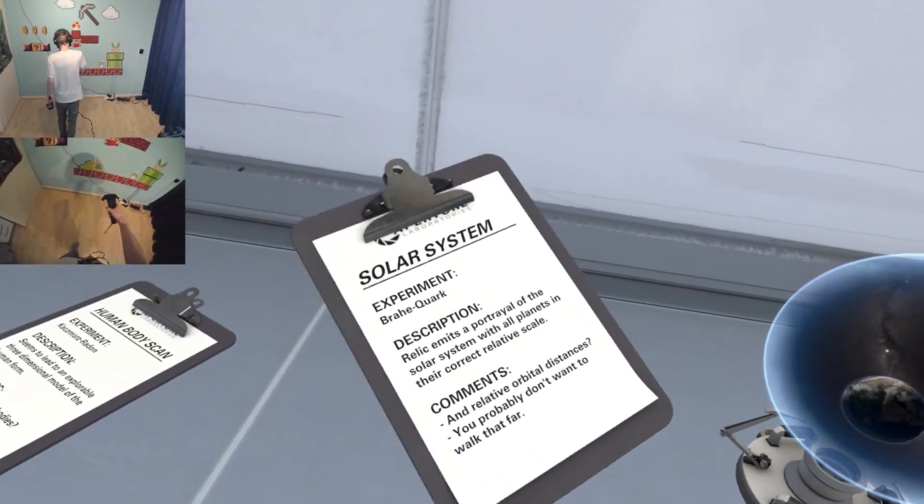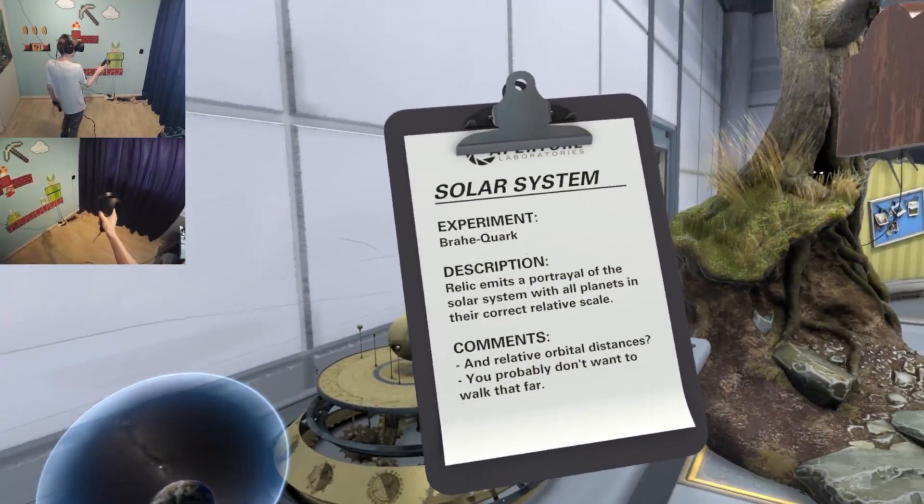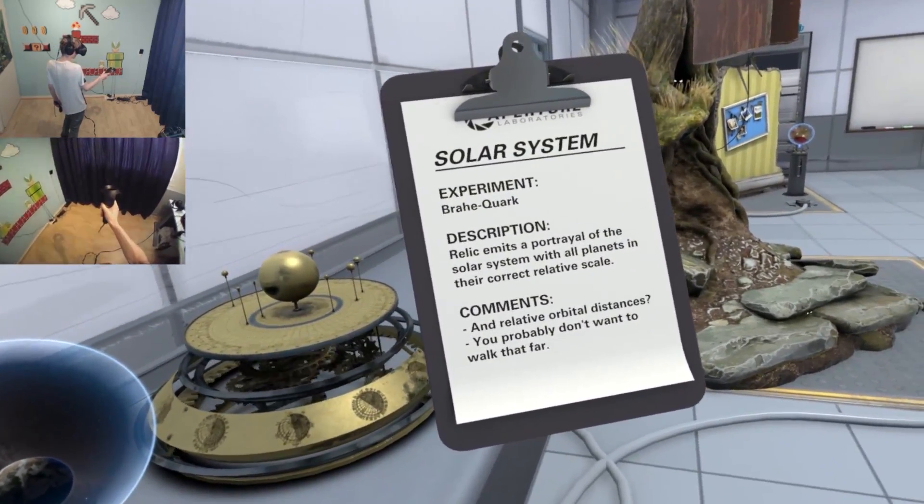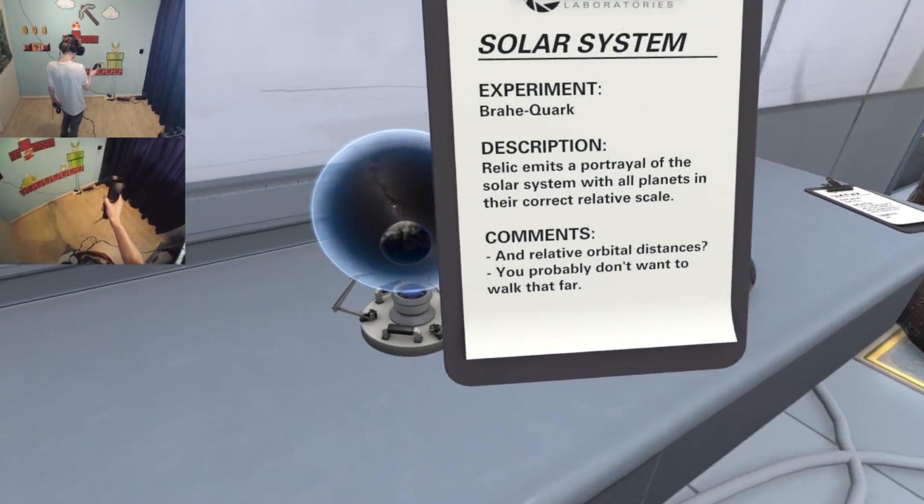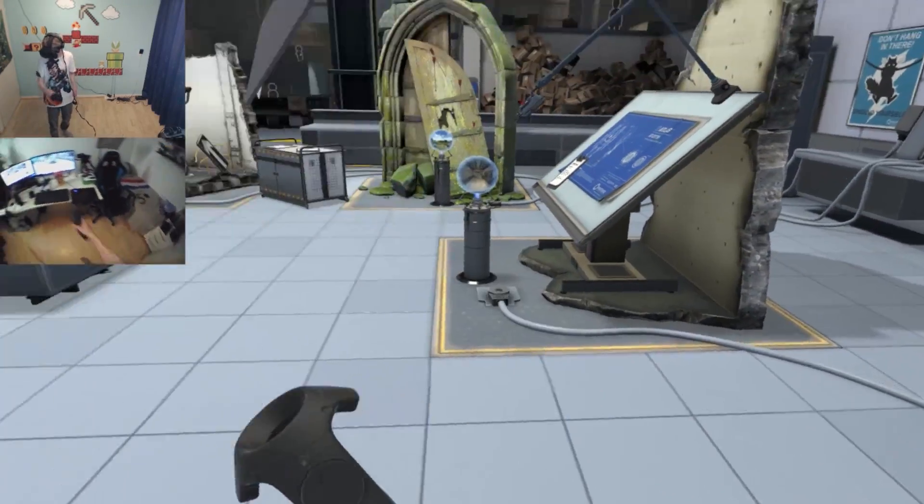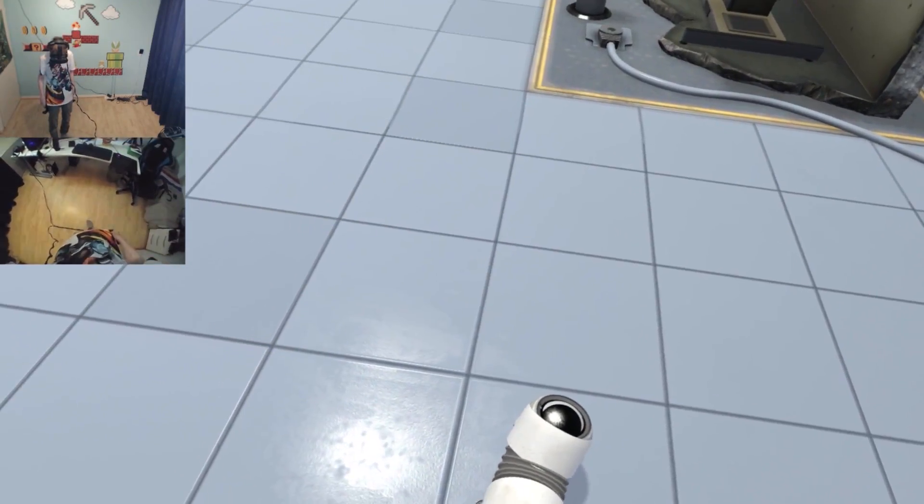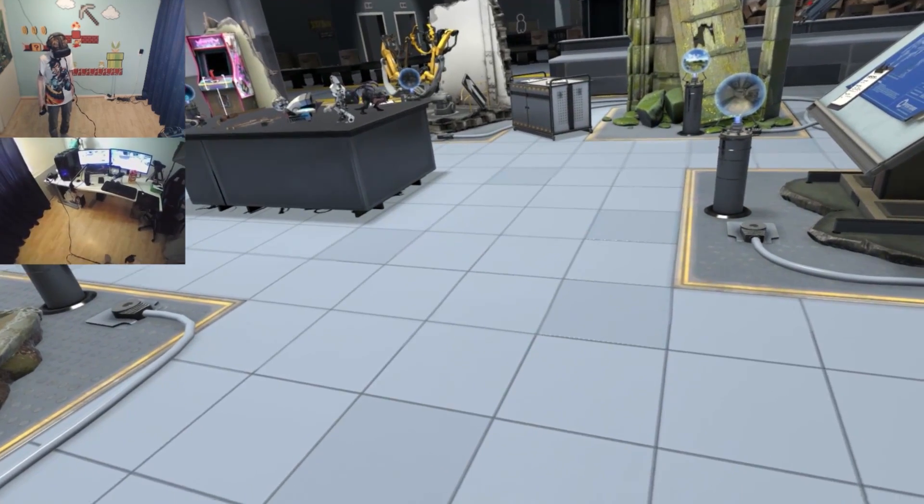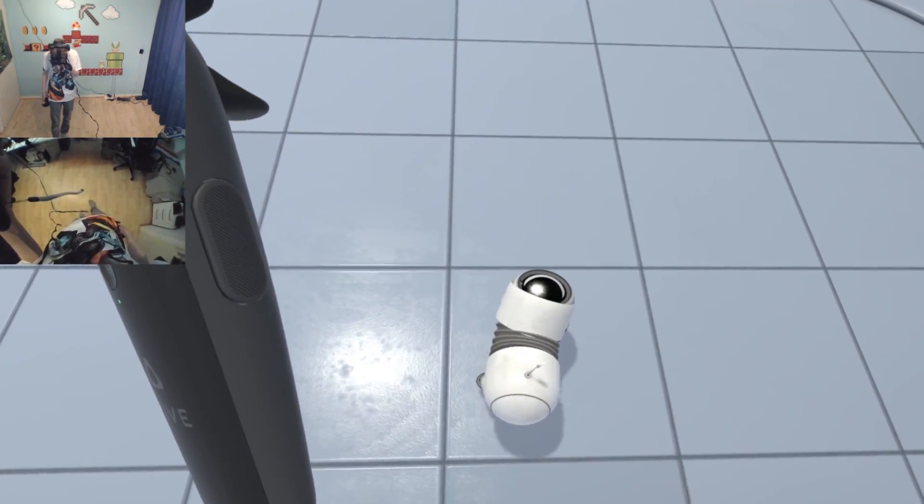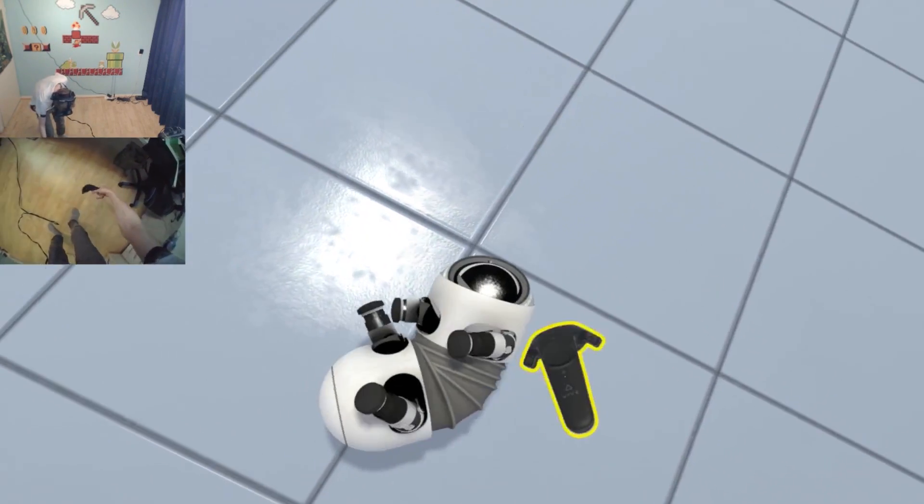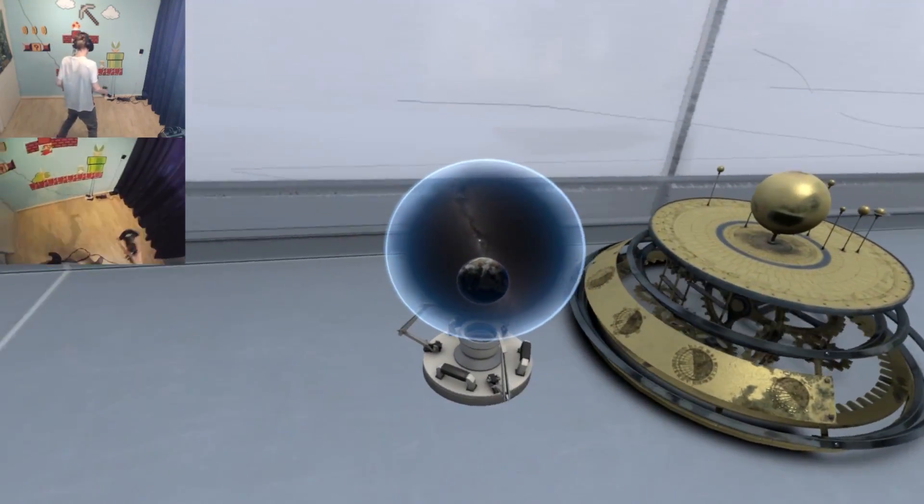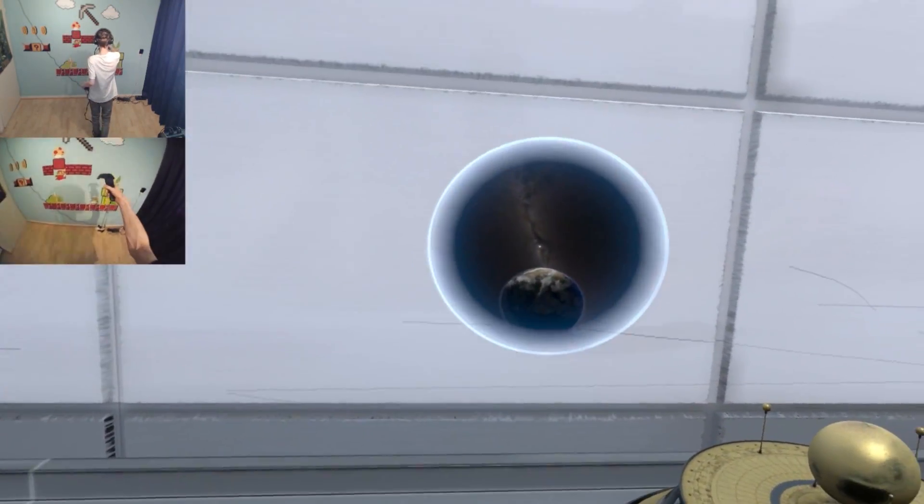We are going to the solar system. There is a note here that says 'relic emits a portrayal of the solar system with all planets in their correct relative scale. Comments: you probably don't want to walk that far.' Thanks for the warning! Let me throw that around, you want it? Go get it! He's normally always eating everything I throw but never mind, he's just twerking in front of me. You like that? Let's jump into this portal, it's going to be great.